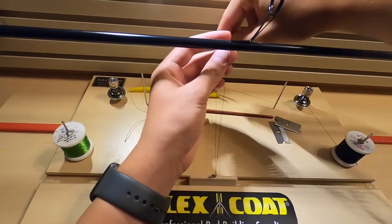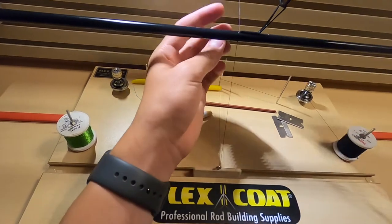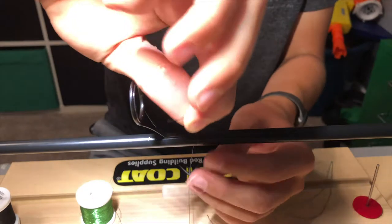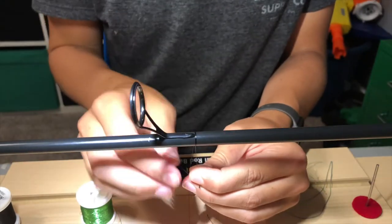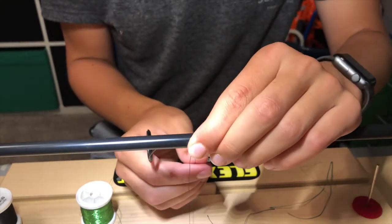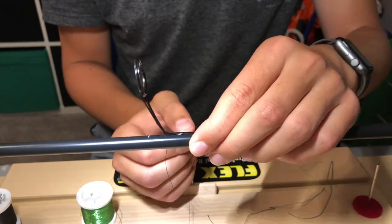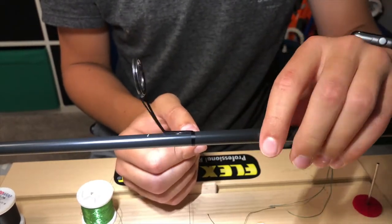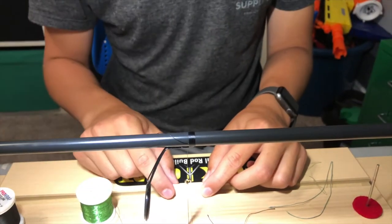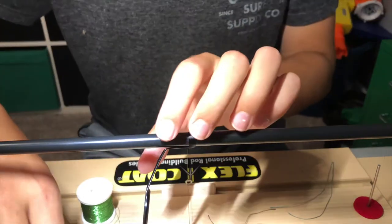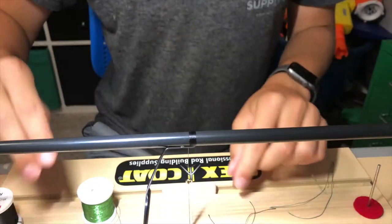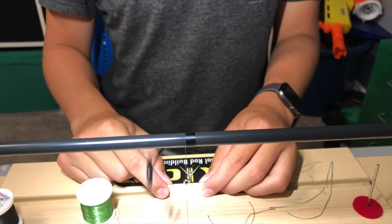So I'm just going to start it off by wrapping it around just like a regular wrap. Just wrap it around that tag end and then we can start power wrapping. I'm going to cut my tag off and wrap it down this blank.